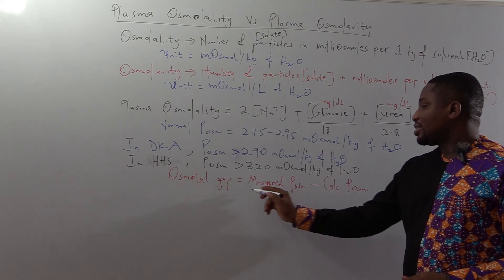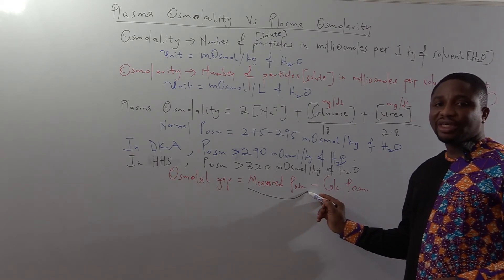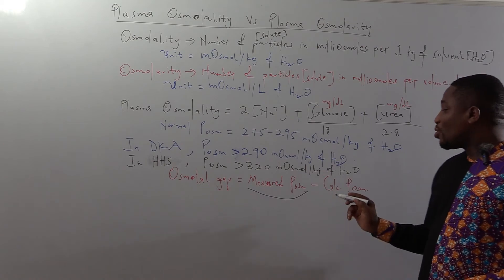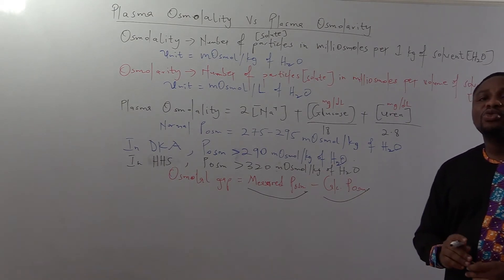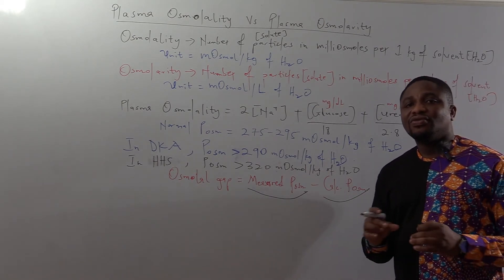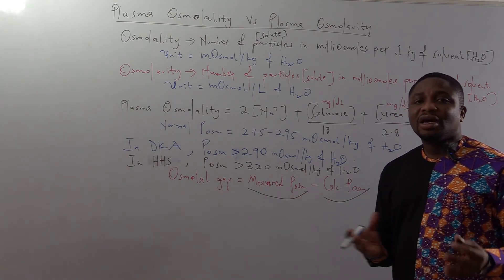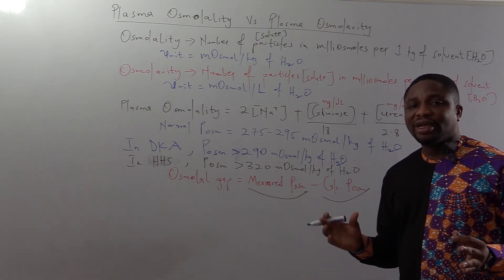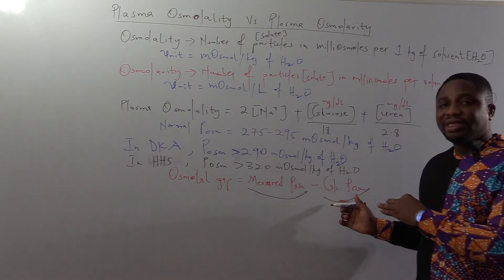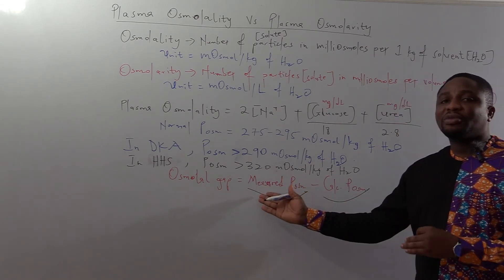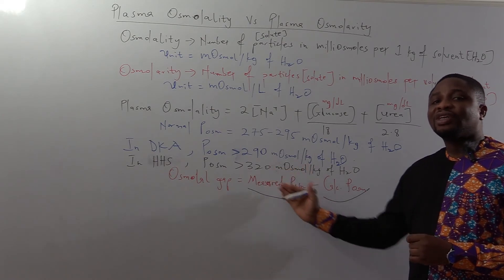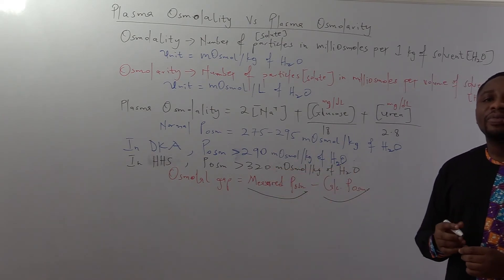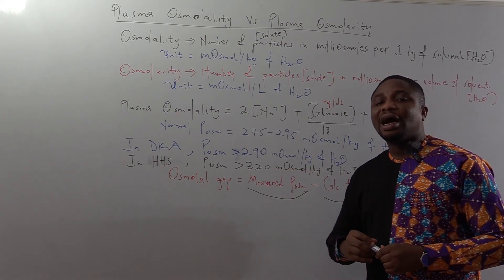The measured refers to that which is coming from the laboratory. The calculated is that which is standard for that particular condition or threshold you are looking at. The difference between these two is what we call osmolar gap.